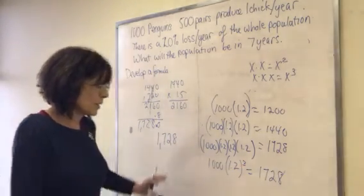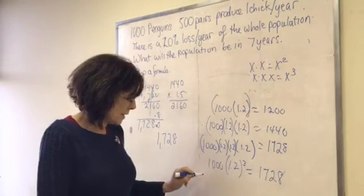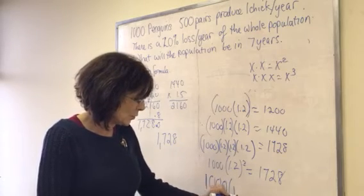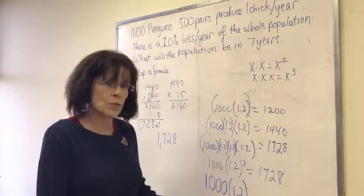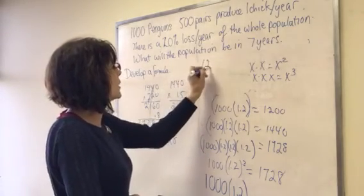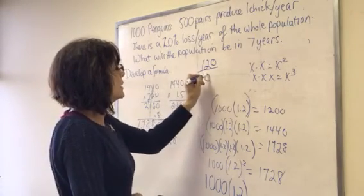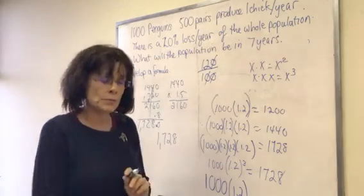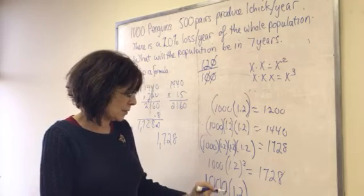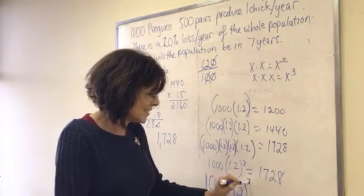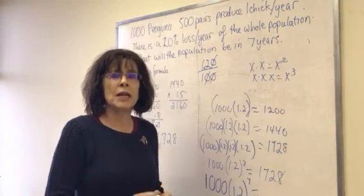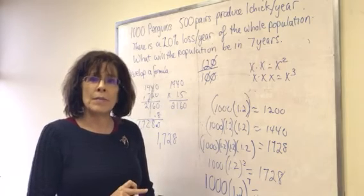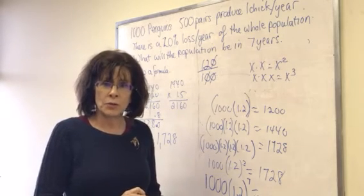So our formula we can see we've developed a formula that says 1000 penguins times a net increase of 120% written as 1.2. Remember 120% reduces down to 12 or 12 over 10 or 1.2. So we have a thousand penguins times 1.2 to the seventh power will get us the population at the end of seven years. And I'll leave it to you to figure out that amount and to verify that the formula is correct.